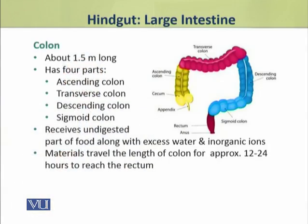The colon part of the large intestine is the longest part, about 1.5 meters long in humans. It has four parts: the ascending colon, transverse colon, descending colon, and sigmoid colon.